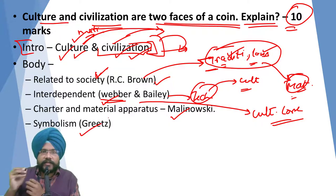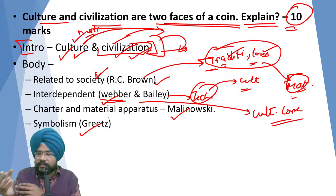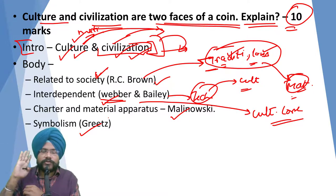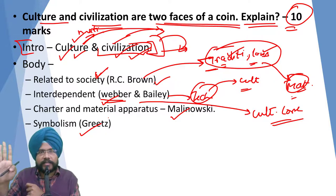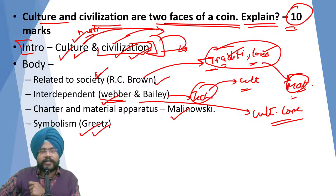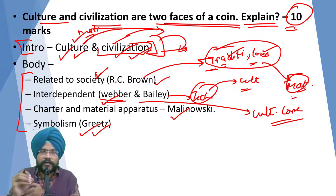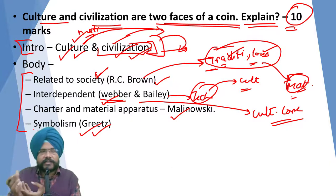Then Geertz wrote about these things as well. His view was that every material object in culture represents a symbol — for example, a turban also symbolizes something, but what it symbolizes depends upon the culture. So they are also in tandem. Notice that these are all different dimensions — don't just grab one thinker like Radcliffe-Brown or Weber and keep running with only them. This diversity in the answer is what you need to bring.